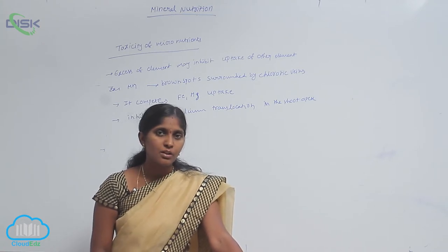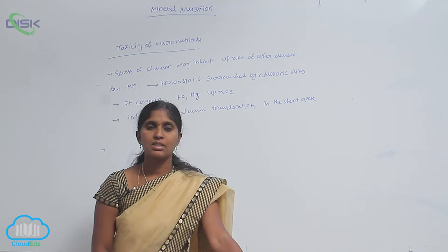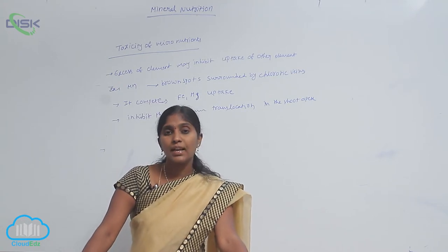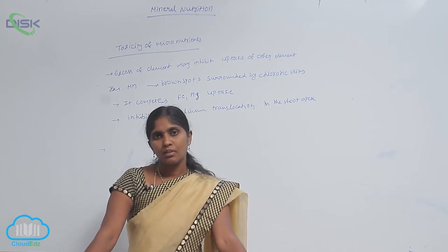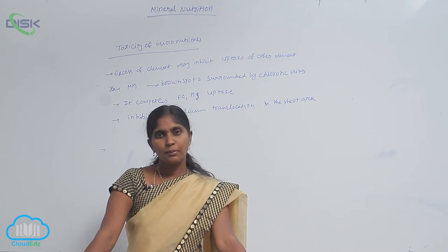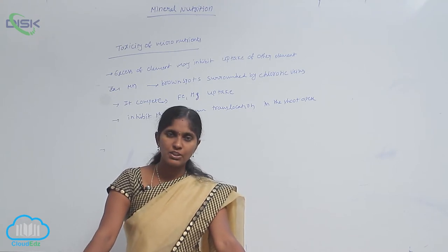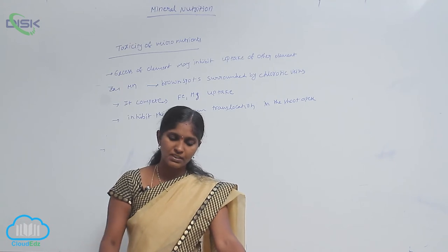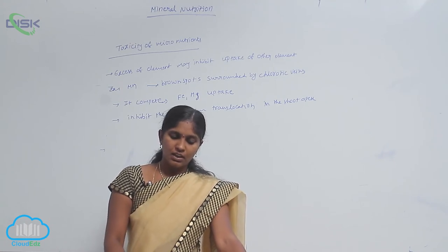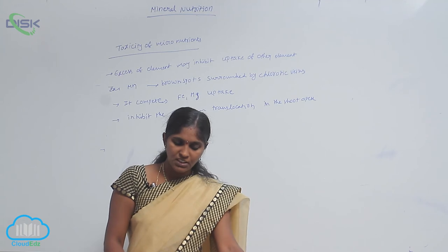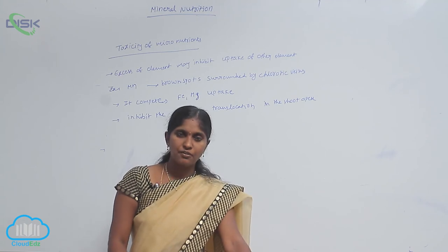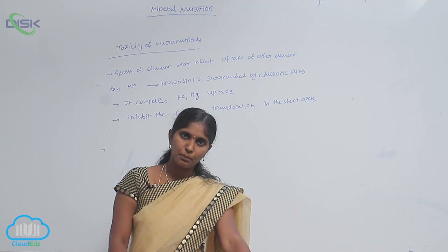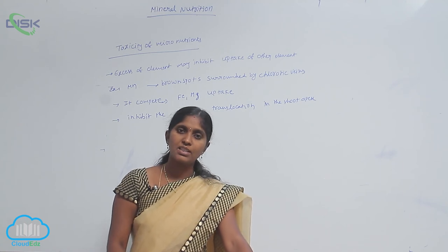Manganese toxicity also inhibits the translocation of calcium ions in the shoot apex. The excess of manganese induces deficiency of iron, magnesium, as well as calcium.